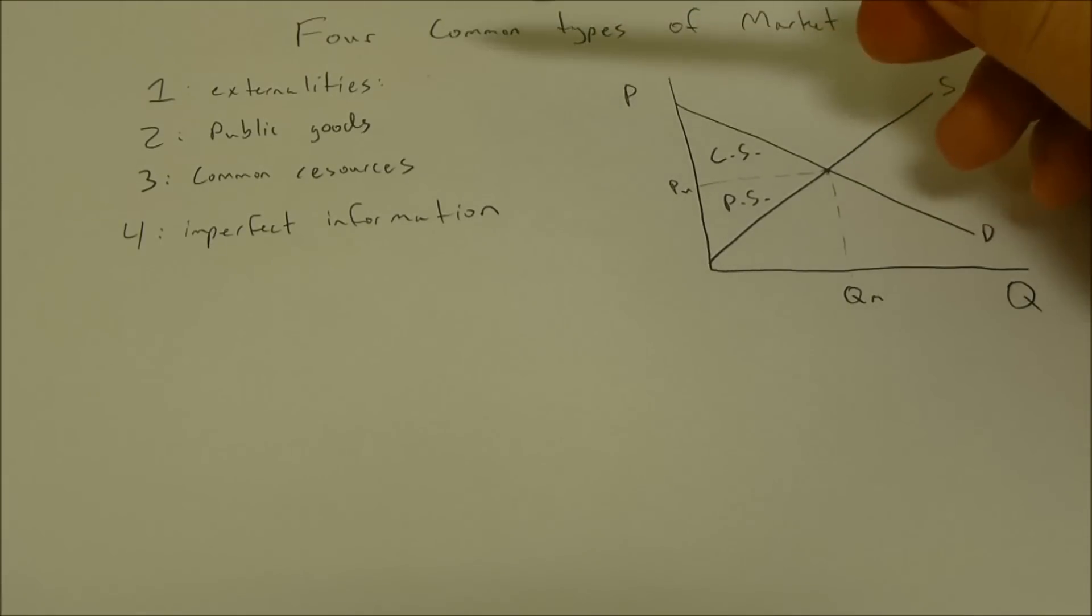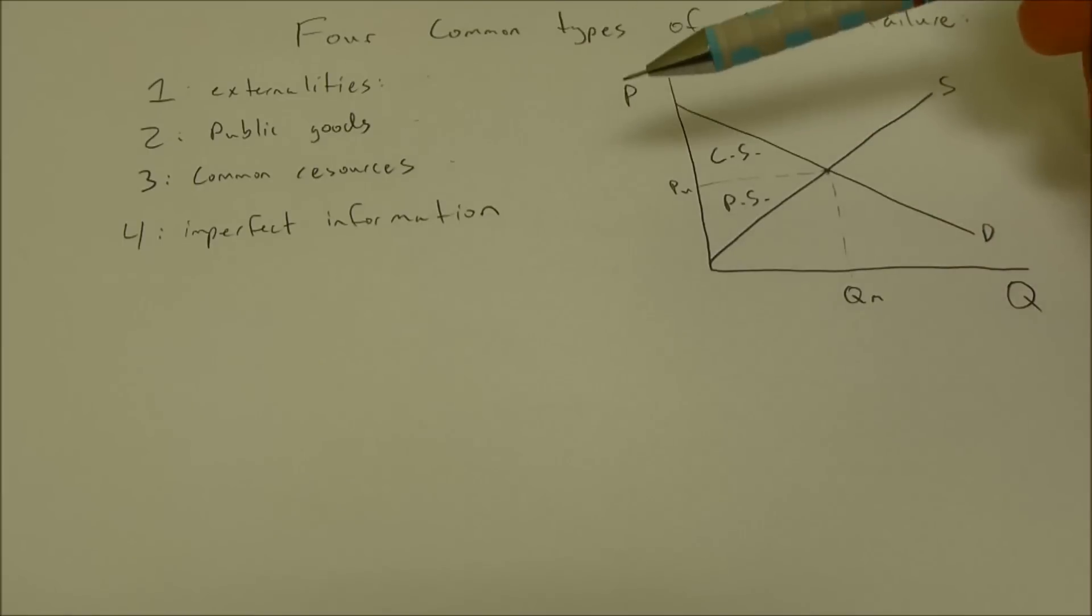The first are externalities, the second are public goods, third common resources, fourth imperfect information. Now there are some other types of market failure, but we're not going to get into those today. These are the four most common types.